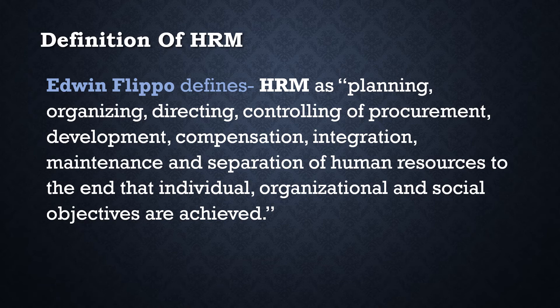The first part — Planning, Organizing, Directing, Controlling — are the functions of management. In the middle part, the Human Resources are managed through processes such as: Procurement, which includes recruitment and selection of employees; Development, which includes providing training and updating employees; Compensation, which is related to employee pay for their work; Integration, which involves team approach; Maintenance, which covers health, safety, and welfare; and Separation, which refers to the separation of an incapable employee who does not achieve the objectives of the organization.